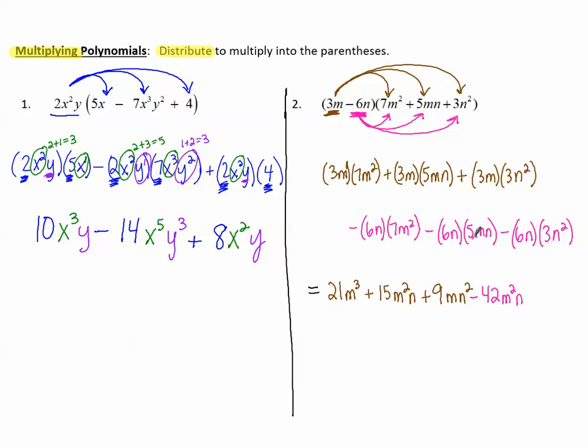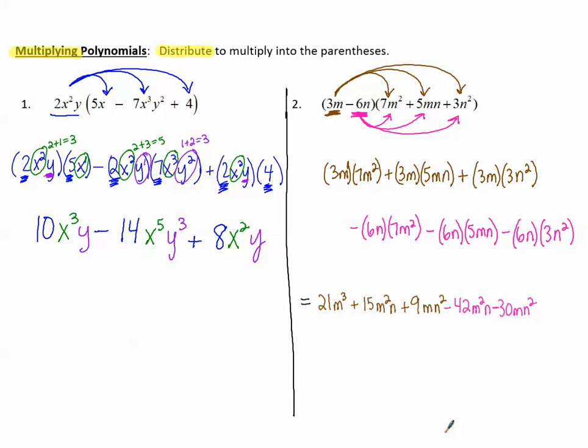-6 times 5 is -30. So minus 30. m before n. n times n makes n². And then -6 times 3 makes -18. n to the first times n². 1 plus 2 makes 3. So n³.